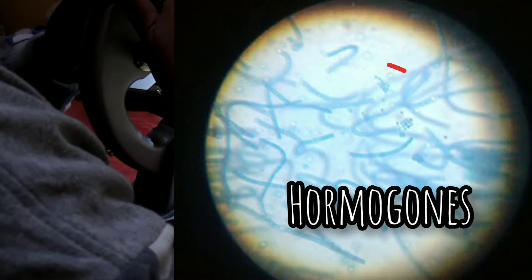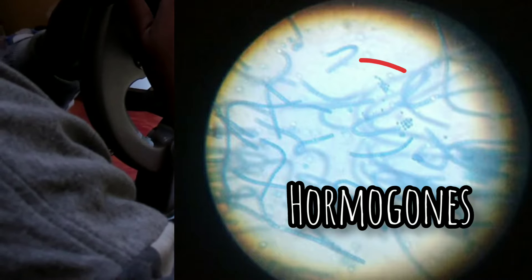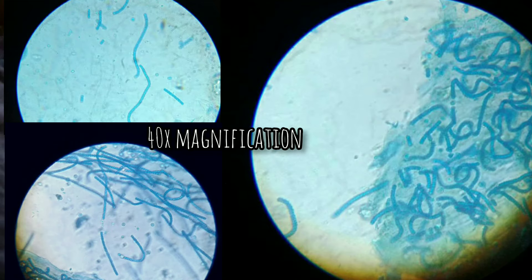The filaments also break into a number of pieces, that is hormogonia, by the decay of ordinary cells. According to Smith, hormogonia often develop into new trichomes without being liberated from the colony. It is documented that the reproduction takes place by hormogonia and akinetes. This is all about the simple salient features of Nostoc based on microscopic images.